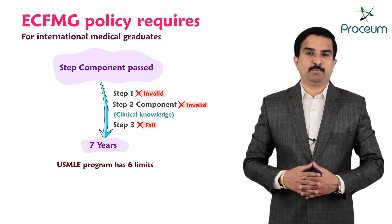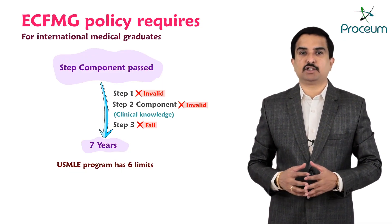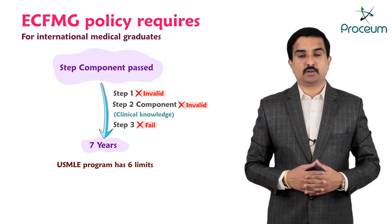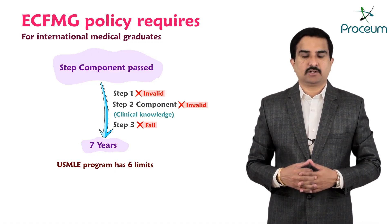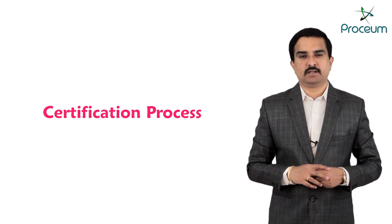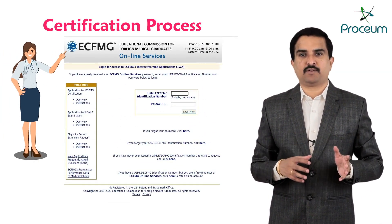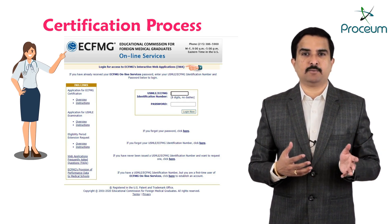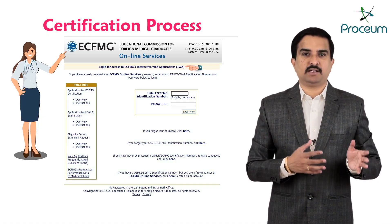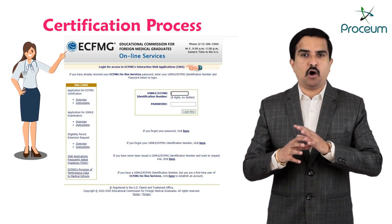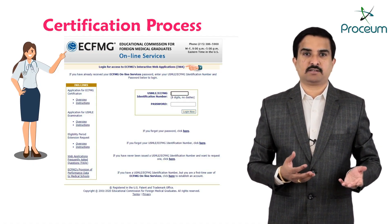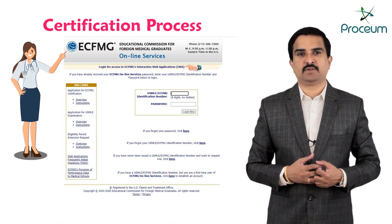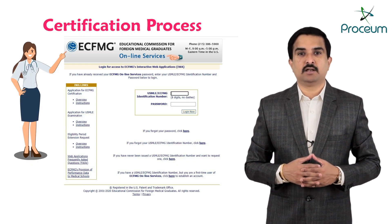The USMLE program limits to 6 the total number of times an examinee can take the same step or step component. The certification process begins with a request for a USMLE/ECFMG identification number through ECFMG's interactive web application. Once ECFMG assigns a number, it must be included in all communications thereafter — applications, medical education credentials, request forms, and payments sent to ECFMG — and is also required to use ECFMG's online services.